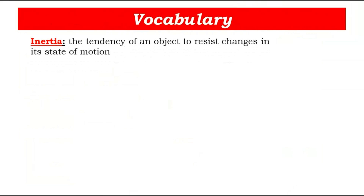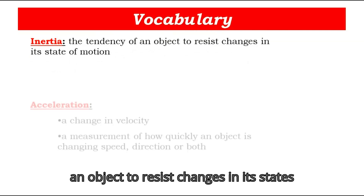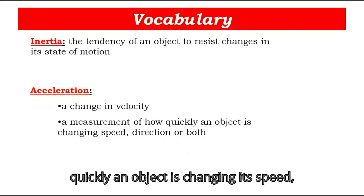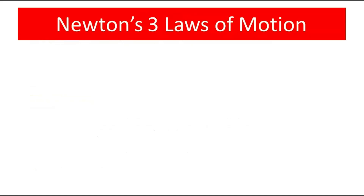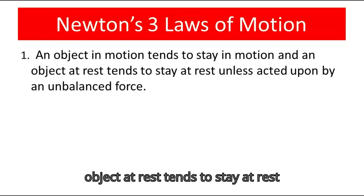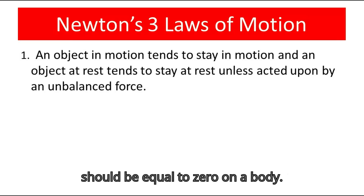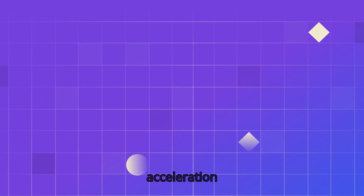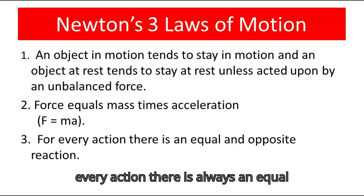To summarize the key vocabulary: inertia is the tendency of an object to resist changes in its state of motion; acceleration is the change in velocity — a measurement of how quickly an object is changing its speed, direction, or both; and force is a push or a pull. The three laws state: first, an object in motion stays in motion and an object at rest stays at rest unless acted upon by an unbalanced force (net force = 0); second, force equals mass times acceleration; third, for every action there is always an equal but opposite reaction.